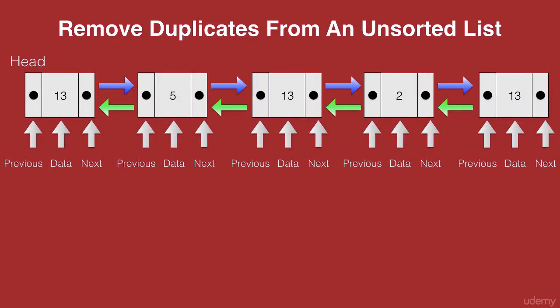In this example, we have all the data of nodes in random order. Now to understand the problem, you see that we have a node with data 13 and somewhere down the line we also have two more nodes with the data 13 which is a repetition. So we need to eliminate these two duplicate nodes from this list.